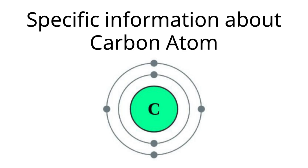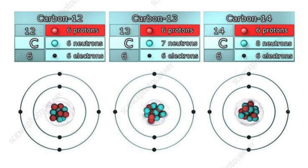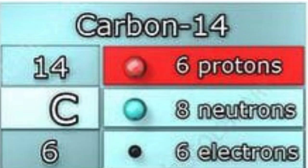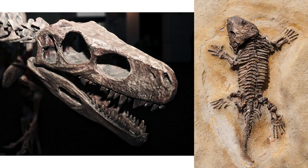Specific information about carbon atom. Isotopes of carbon. Carbon has two stable isotopes, carbon-12 and carbon-13, and a radioactive isotope, carbon-14. Carbon-14 is used in radiocarbon dating to determine the age of ancient artifacts and fossils.